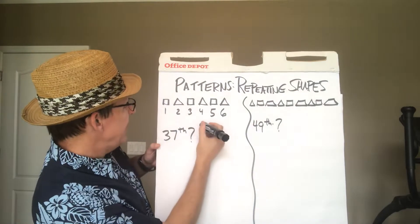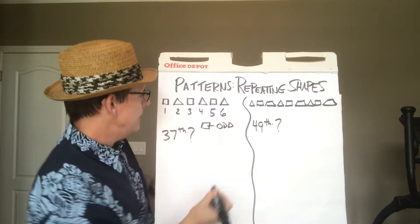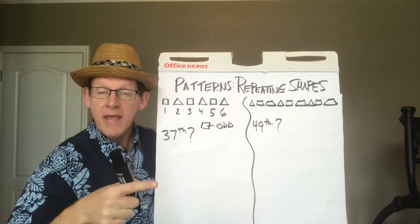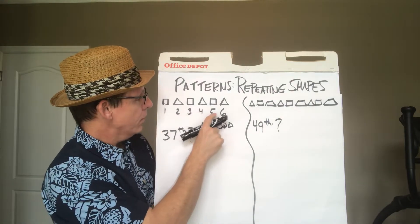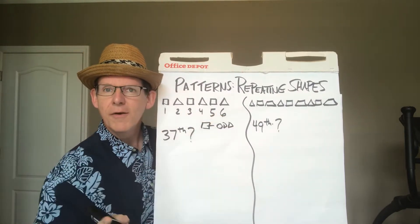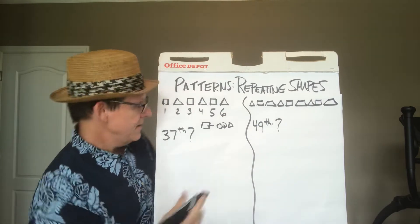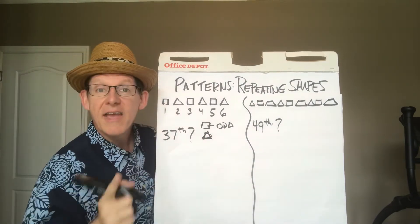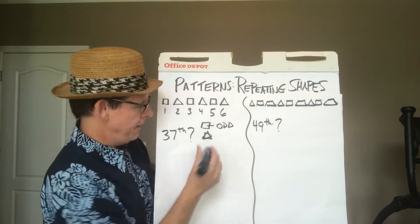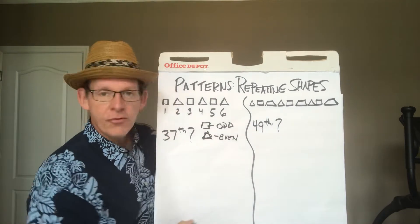So that means that every square has to be odd. Let's look at the triangles. Triangles are 2, 4, and 6. What do we notice about those numbers? That's right! They are all, not a regular triangle, they are all even.